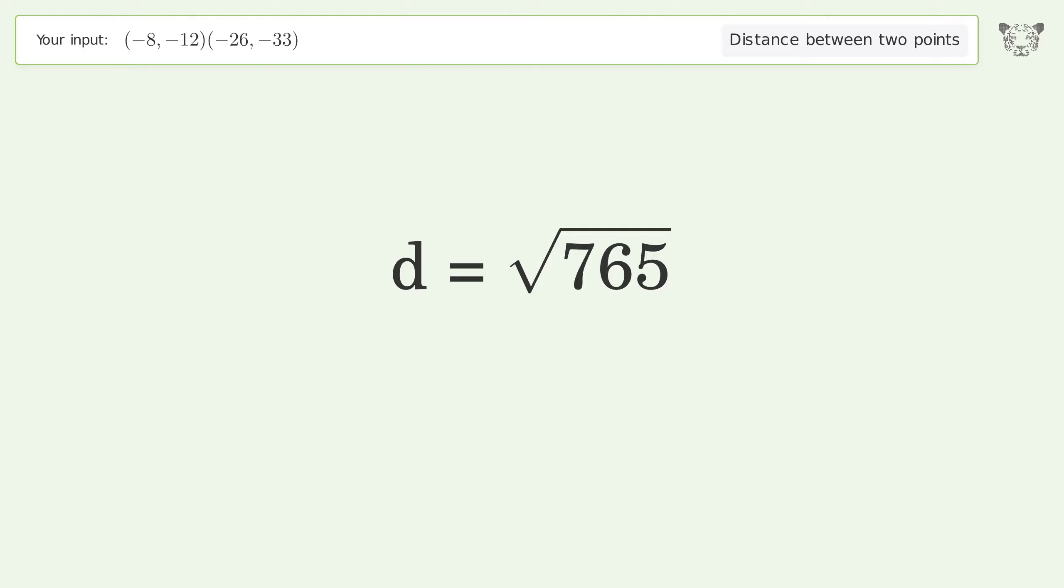And so the distance between the two points is the square root of 765 or 27.659.